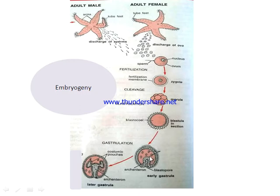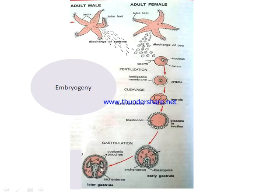From the advancing end of the archenteron, a few cells bud off and will form the mesoderm — these are the mesenchyme cells. Also, further along, the advancing end of the archenteron forms coelomic pouches — left and right coelomic pouches — which will form the coelom, mesodermal lining, and the water vascular system.